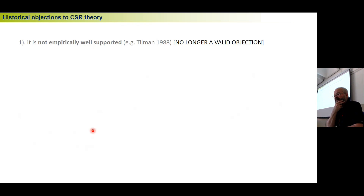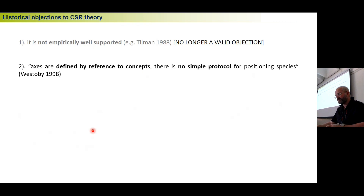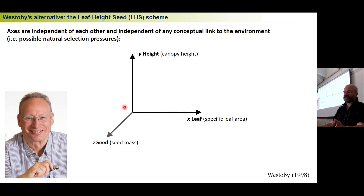So we can conceptually accept the CSR triangle. It's important to understand CSR theory because when we're understanding vegetation later, we can use it to understand what's happening — why when we cut the vegetation it has a certain response. Now regarding Westoby's other criticism — that the triangle is a rigid box with no way of measuring — he suggested a different scheme measuring plant height, specific leaf area, and seed mass: the Leaf-Height-Seed or LHS scheme.